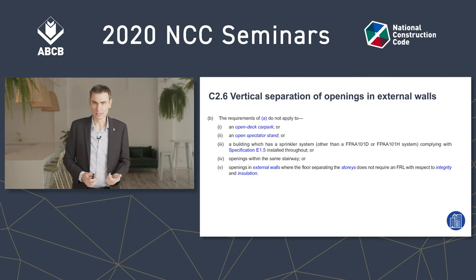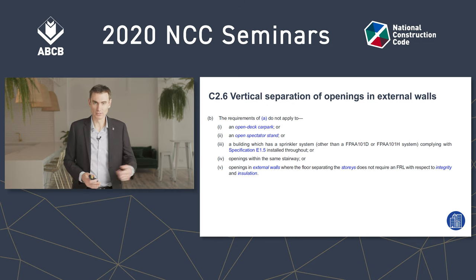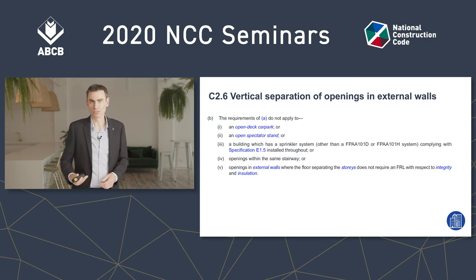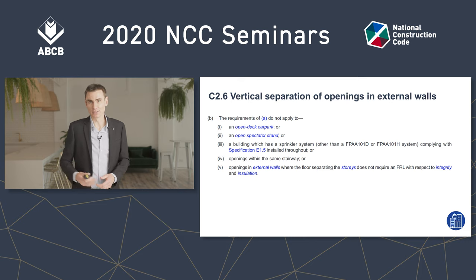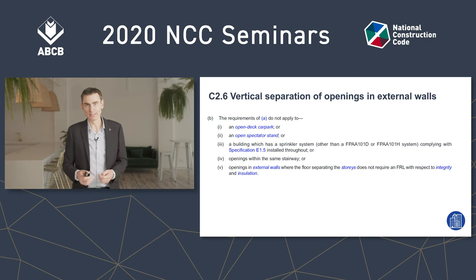I've shown you C2.6(A), which outlines the different ways of achieving the protection. I've also shown you sub-clause C, which tells us that everything is an opening if it doesn't have an FRL of 60/60/60. What I skipped over is sub-clause B, which I'll show you now.